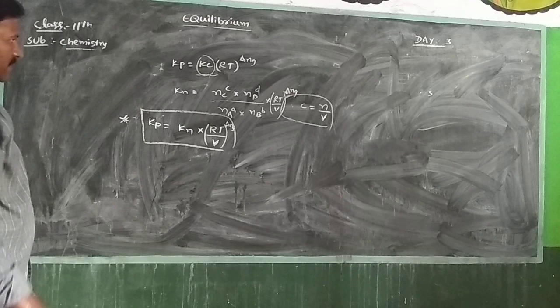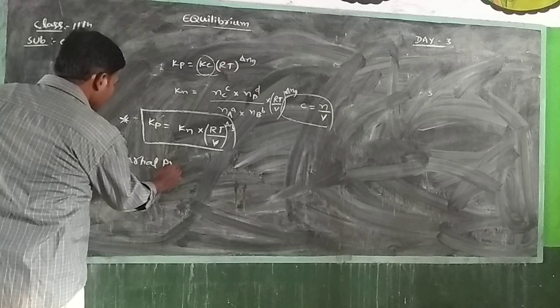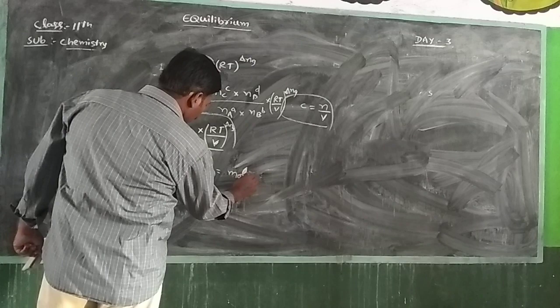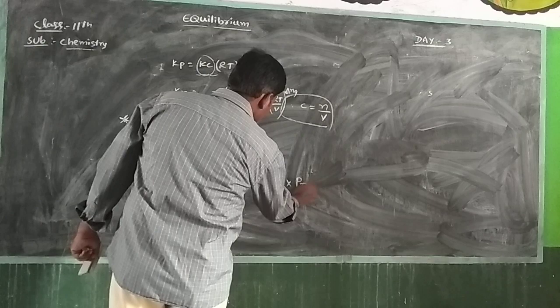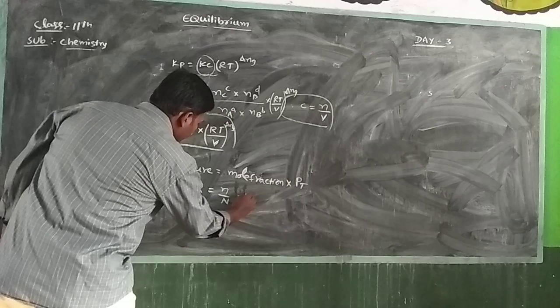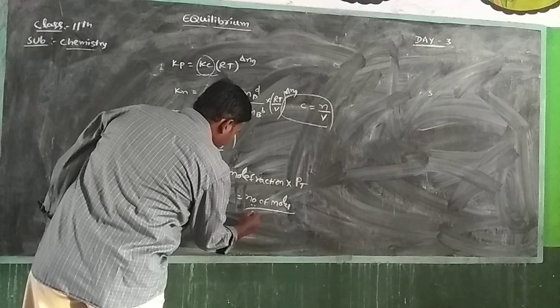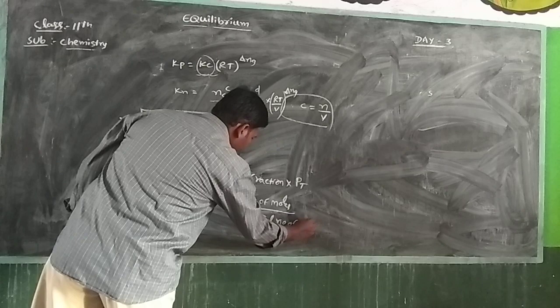This gives another relation for Kp and Kc. Next, partial pressure: partial pressure is equal to mole fraction into total pressure. Mole fraction means number of moles by total number of moles.